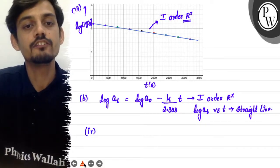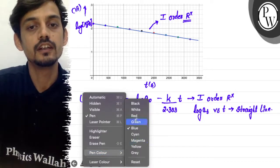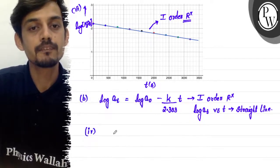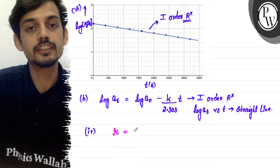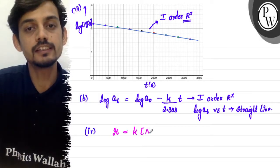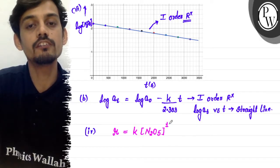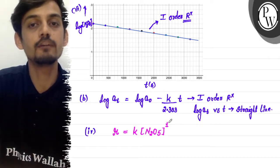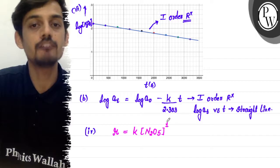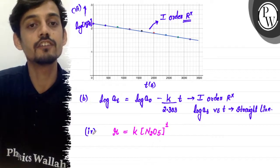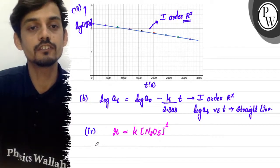For part 4, the rate law of the reaction is: Rate = k × [N2O5]¹, because the order is 1. The order appears as a power in the rate law. This is the answer for the fourth part of the question.